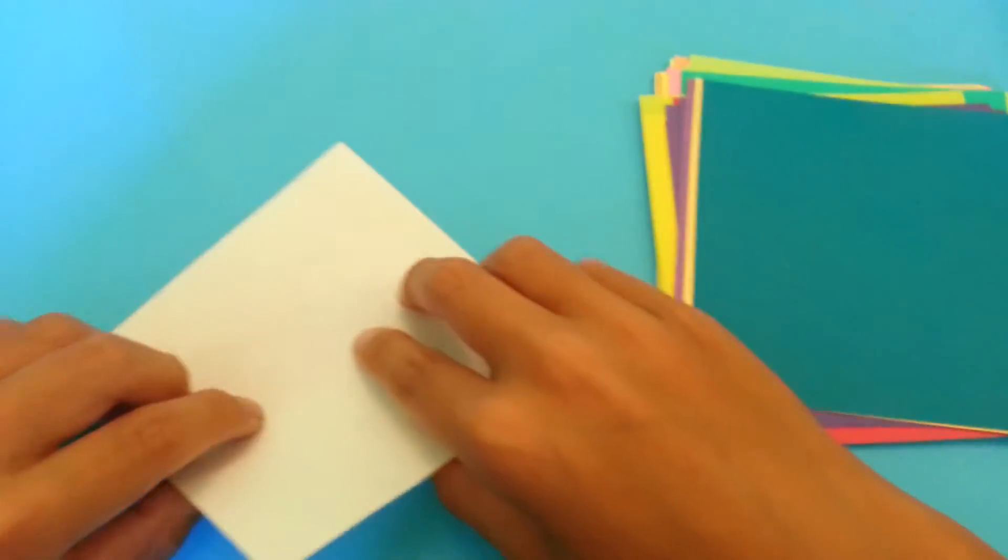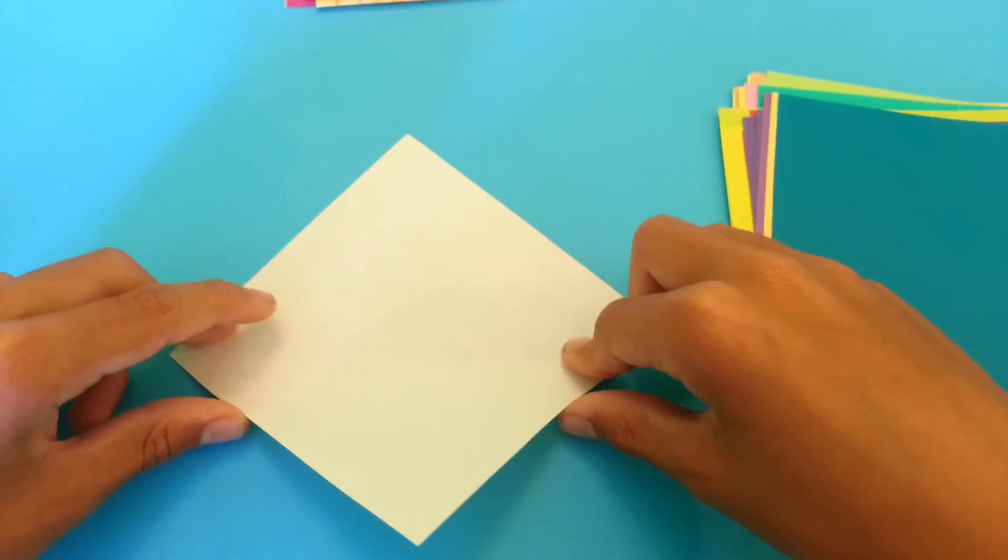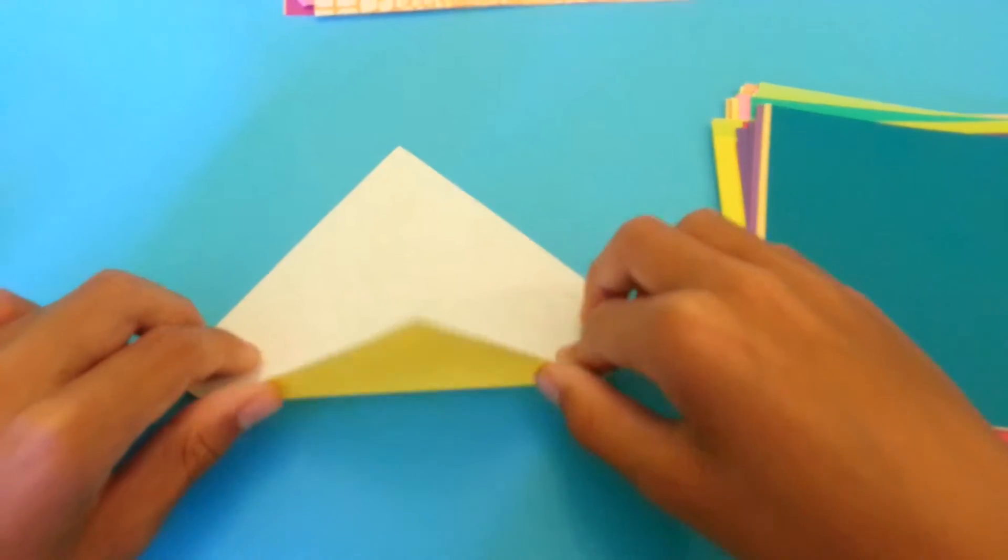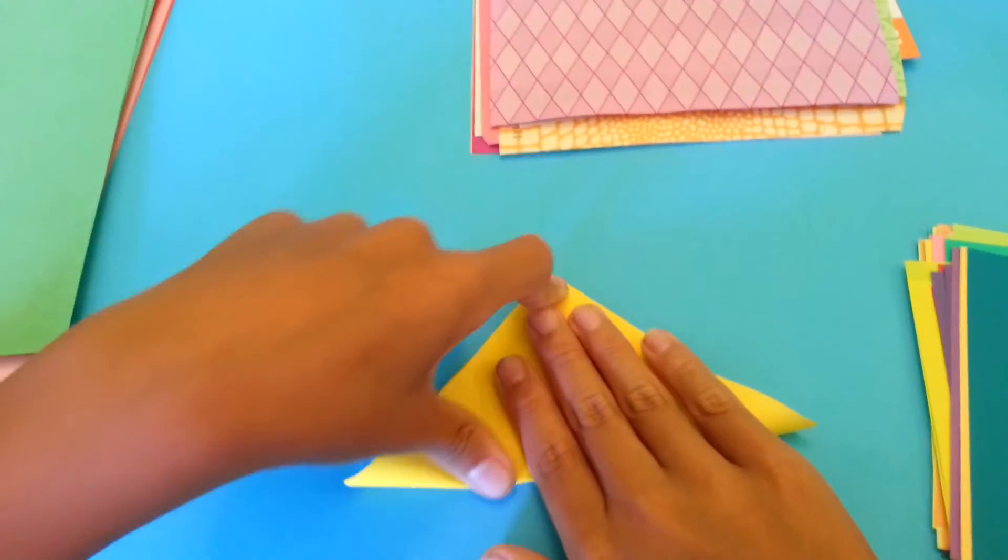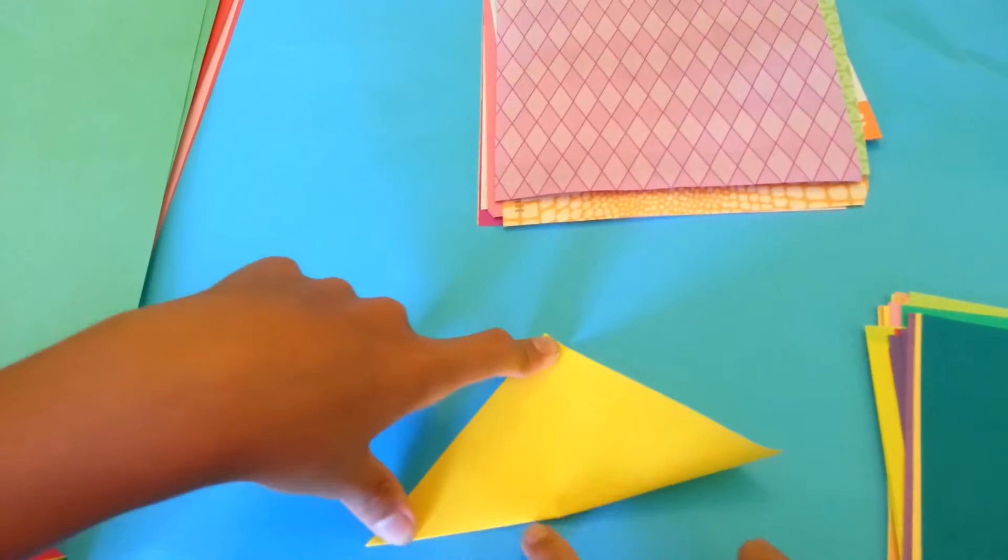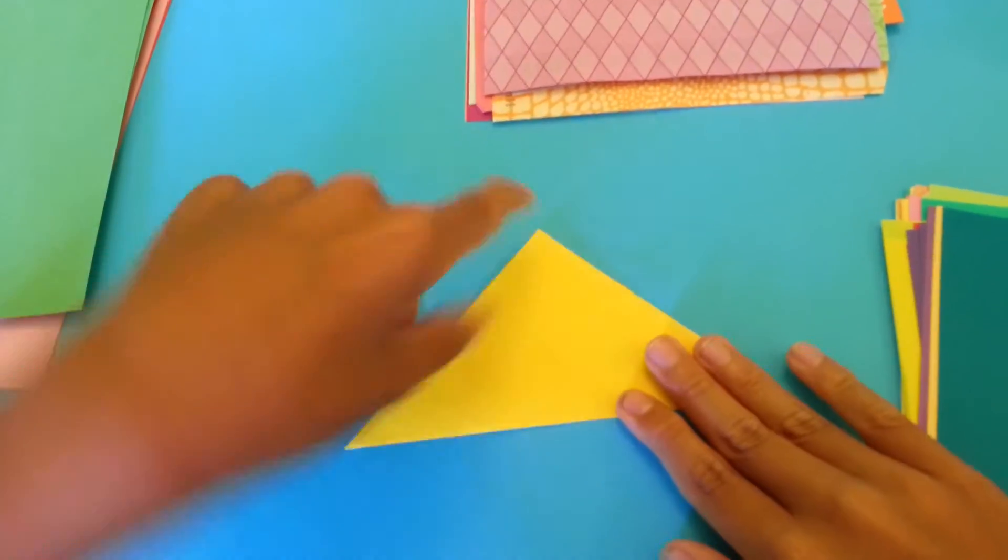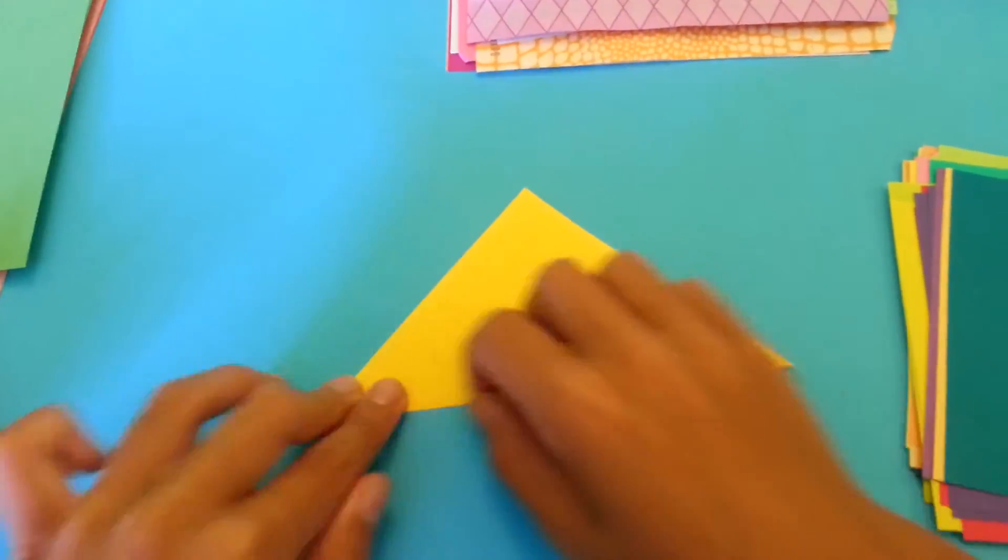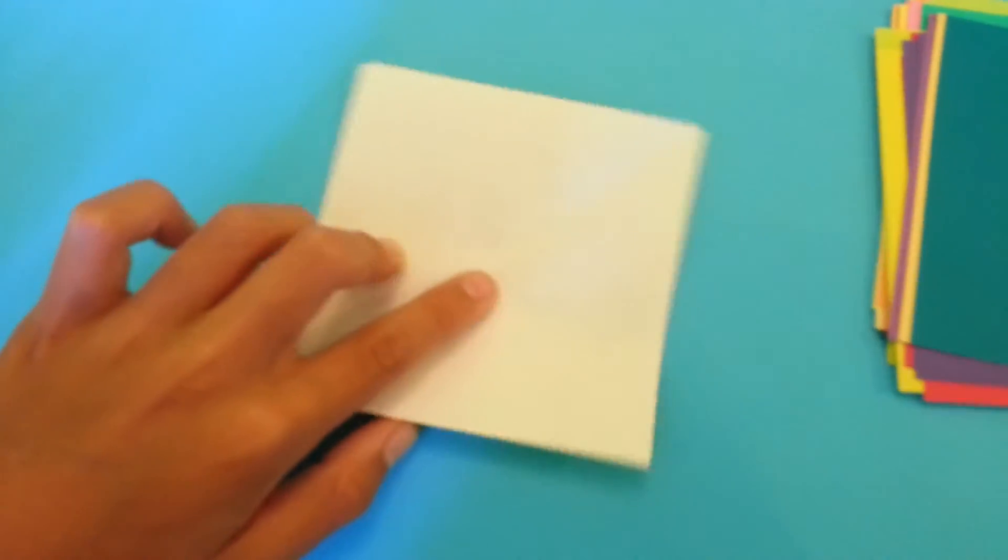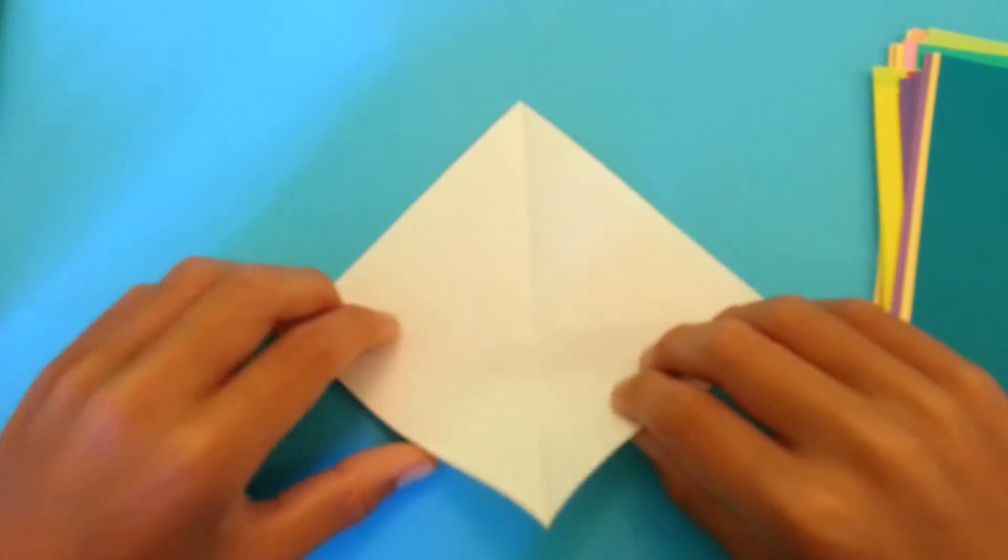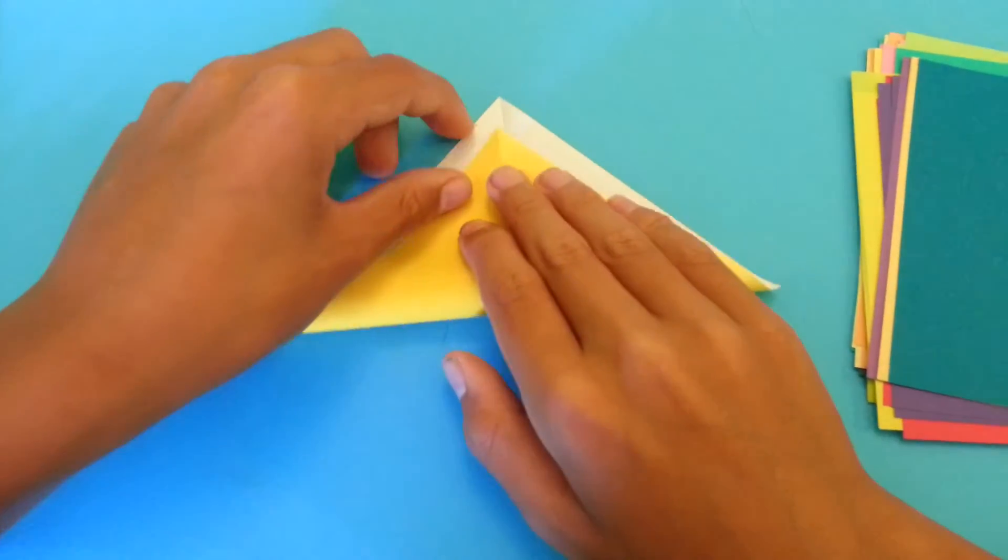If you're using origami paper, then you can start right side up and fold diagonally in half both ways. Now fold, rotate it, and do the same to this side.